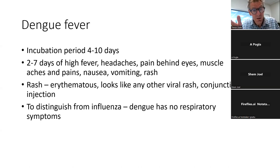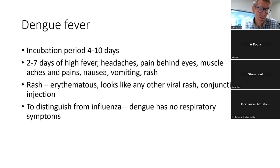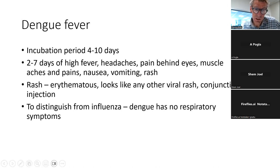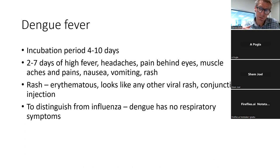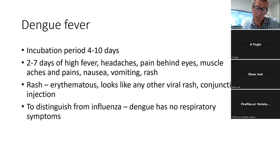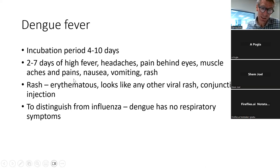Symptoms can look very much like a severe influenza episode or even COVID-19. The rash is a red rash that looks very much like other viral exanthems — similar to measles, rubella, or enterovirus. Many children have conjunctival injection with dengue, not dissimilar to adenovirus. To distinguish from influenza, dengue has no respiratory symptoms at least in the initial stages — children don't have fever, cough, and coryza — which is a clue to distinguish it from respiratory viruses associated with rash.